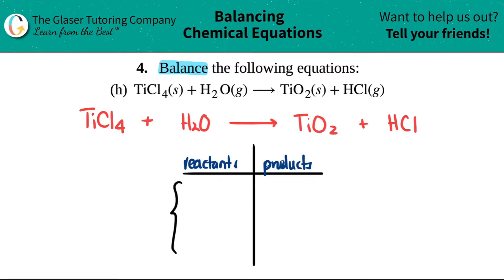We're going to list our individual elements. So you can just start from left to right. What elements do you have? I have a titanium, a Ti. I have a chlorine, a Cl. I have an H, and I have an O. So I have four different elements. Ti, Cl, H, and O.